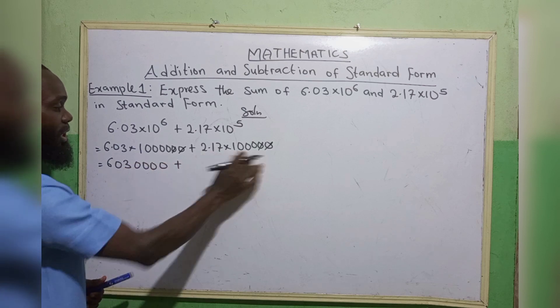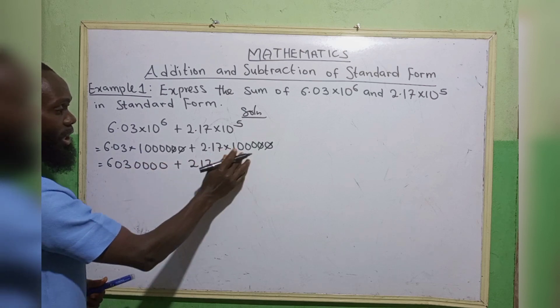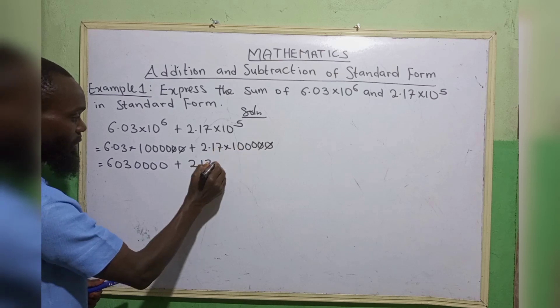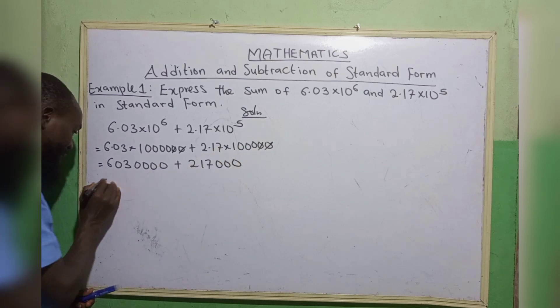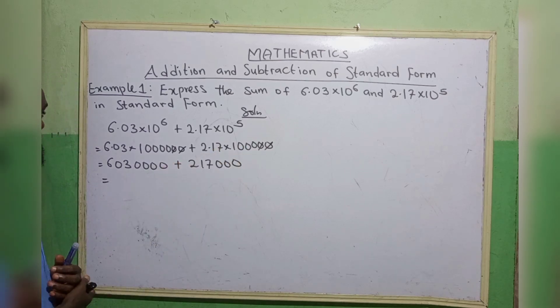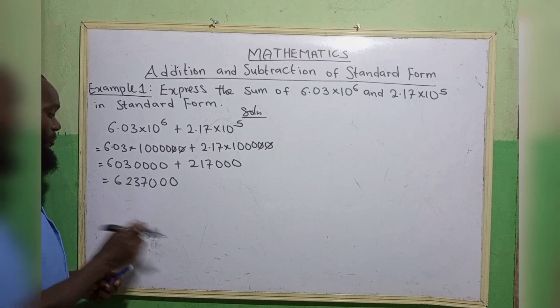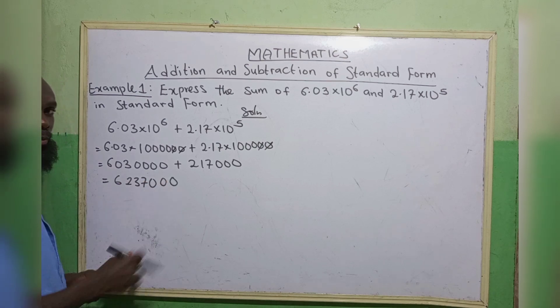Plus 2.17 is remaining 3 zeros. Now, when we add up, what do we have? We have 6,237,000.